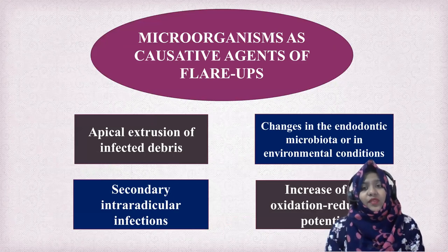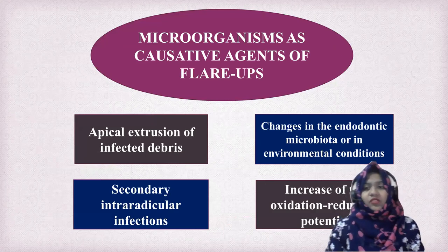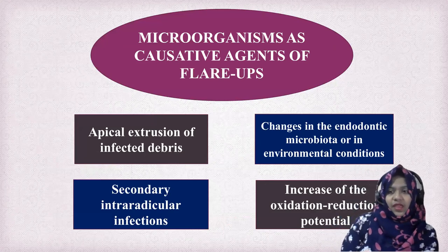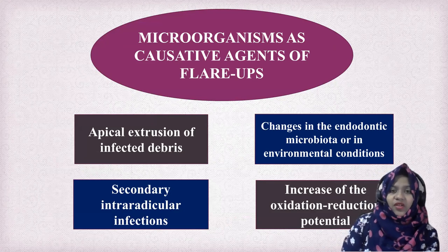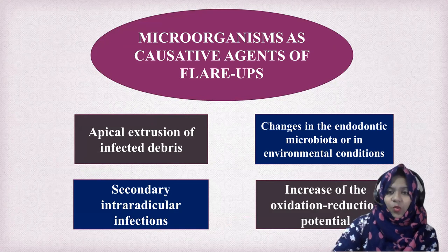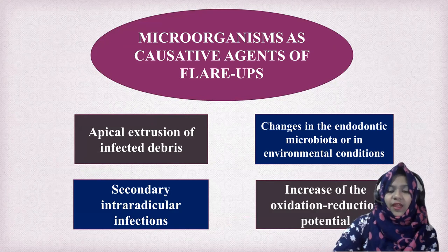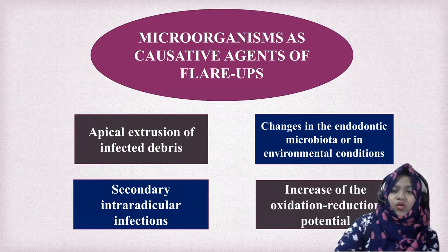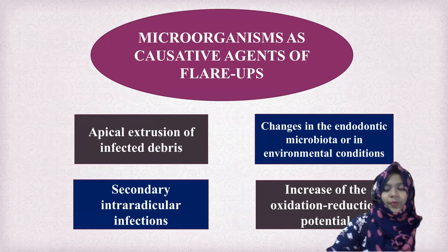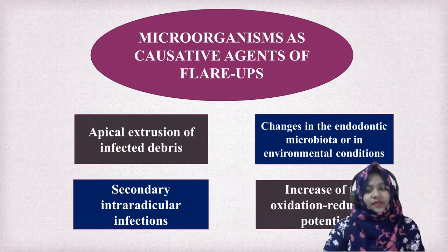How do these microorganisms cause flare-up? There are four basic mechanisms. The first is apical extrusion of infected debris. The second is changes in environmental conditions. The third is secondary intraradicular infections. And lastly, increase of the oxidation-reduction potential. We will see each one in detail.